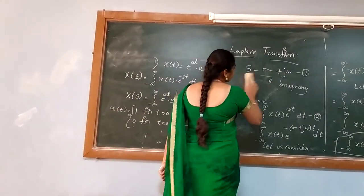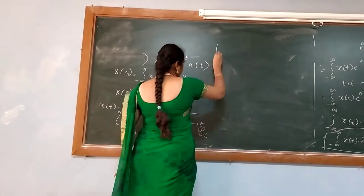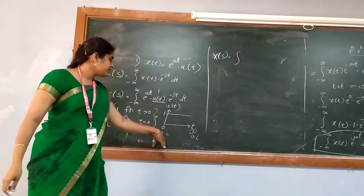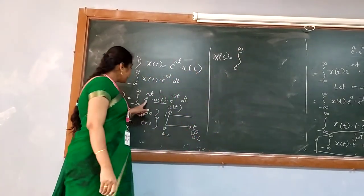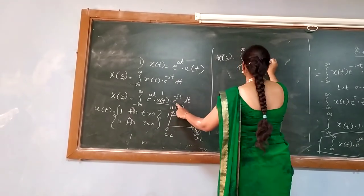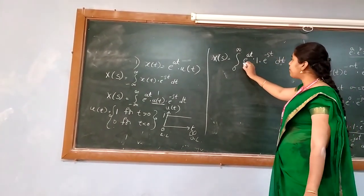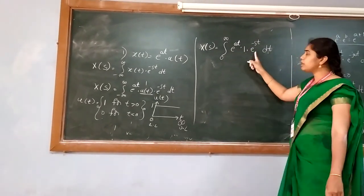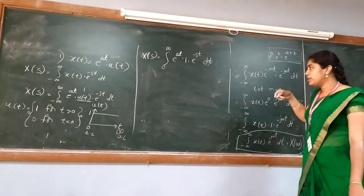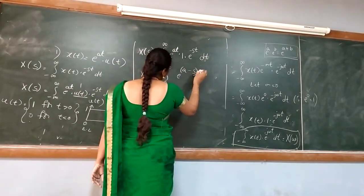Capital X(S) equals the integral from 0 to infinity of e^(at)·1·e^(−St) dt. Using the property e^(at)·e^(−St) = e^(a−S)t, we can write X(S) = integral from 0 to infinity of e^(a−S)t dt. Alternatively, taking minus common: e^(−(S−a)t) dt.